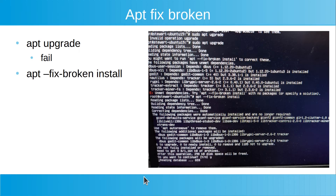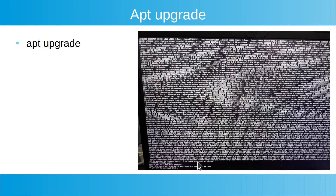I then tried apt upgrade again, which prompted me to run the fix-broken install, so I ran that. After that completed, I ran apt upgrade again, and this time it showed the packages it was now able to install: 1160 packages to upgrade, 38 new, none to remove, and 25 not to upgrade. I set this running - obviously it was going to take some time to install those even though they were already downloaded - so I left it running overnight.